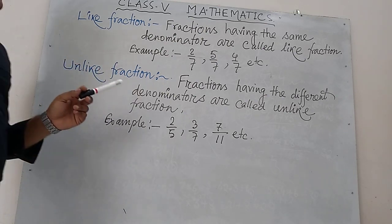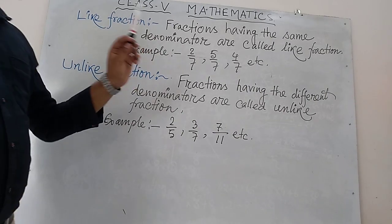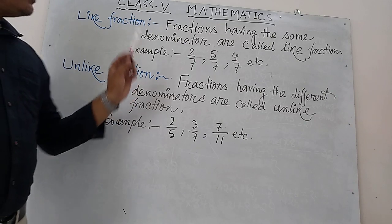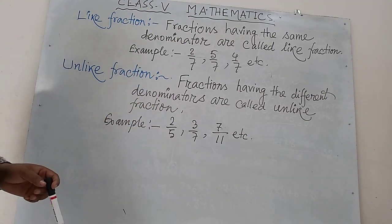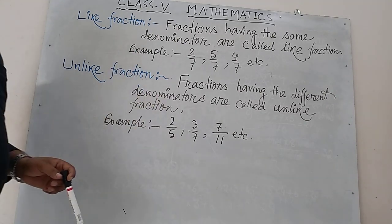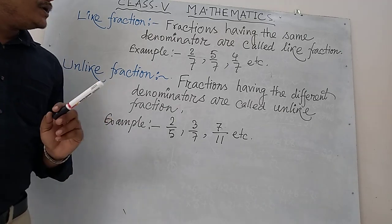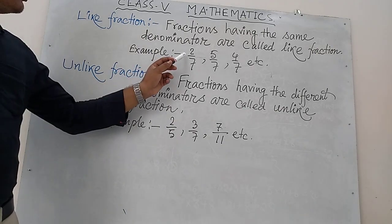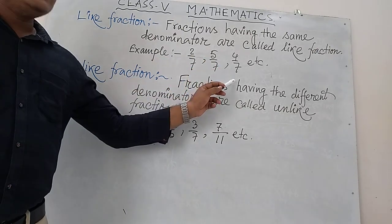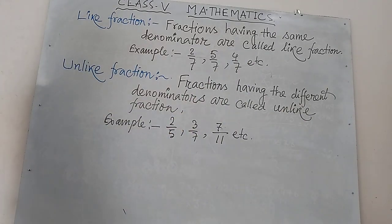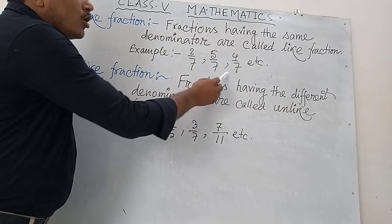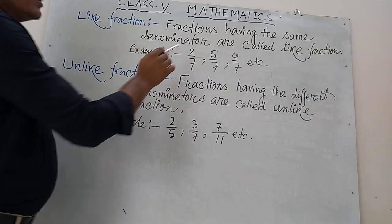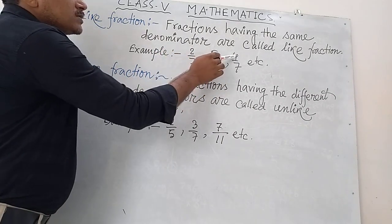What is a like fraction? Fractions having the same denominators are called like fractions. For example, 2 by 7, 5 by 7, 4 by 7, and so on. Now you can see here all denominators are the same — all are 7. But the numerators are different.